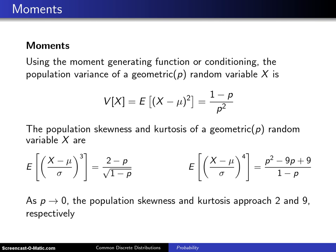The population variance of a geometric p random variable is sigma squared, or the variance of X, is the expected value of X minus mu quantity squared, and that turns out to be 1 minus p divided by p squared. So that's the population variance.